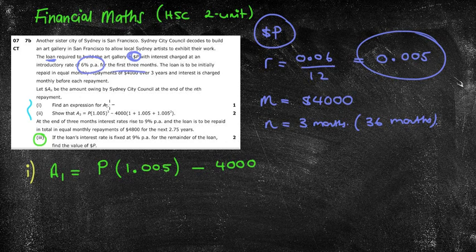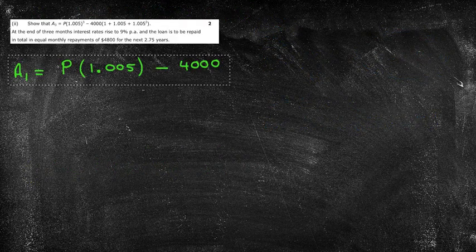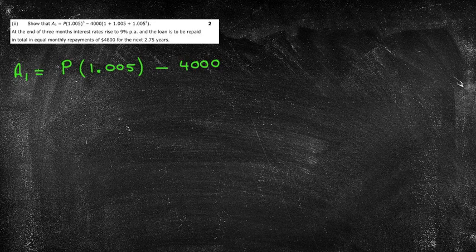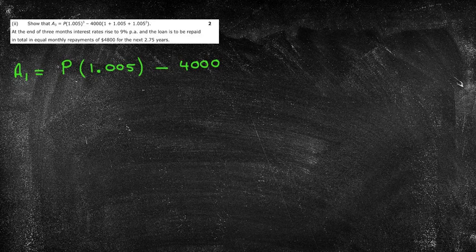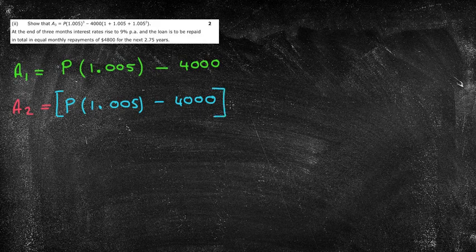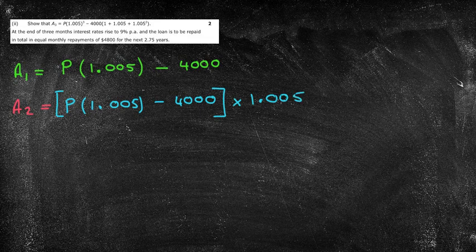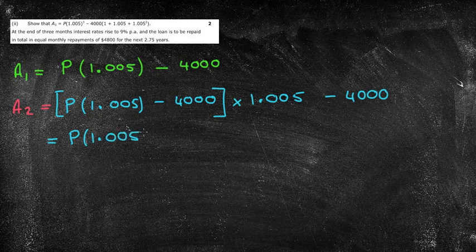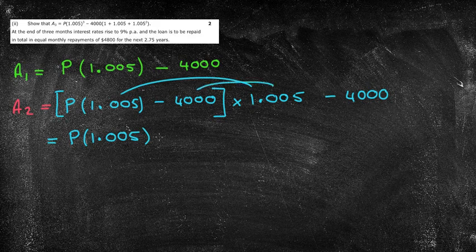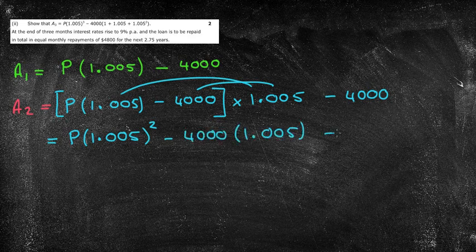The second part is a bit more complicated and asks us to find an expression for A3. We've got our A1 which we just proved in the previous question. So we're now going to form our second month of repayments. We've got our first month of 1.005, we subtracted the $4,000. Now for that first month, whatever that amount is going to come out to, we're then going to times by 1.005 again because we've been charged at 6% per annum but on a monthly base, and then we're going to subtract $4,000 just like we did originally.